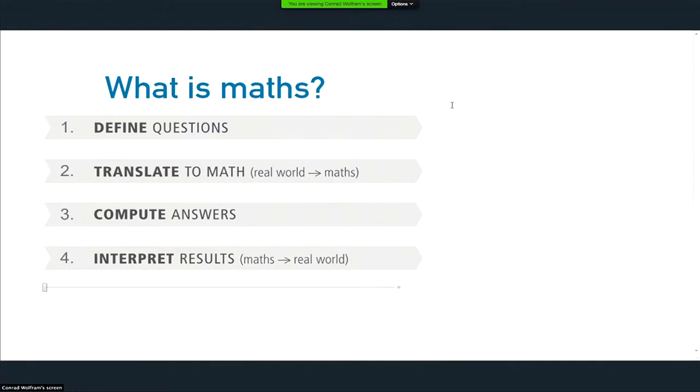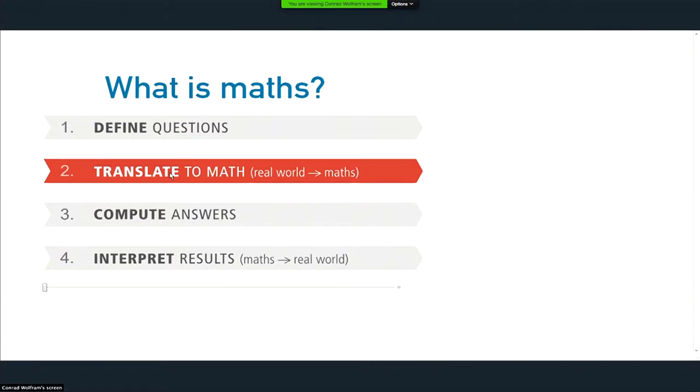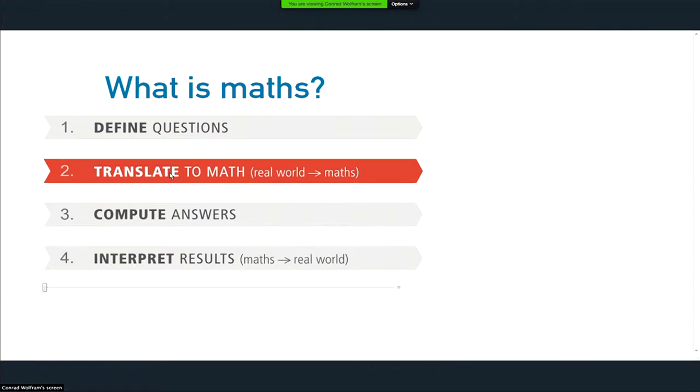When you look at math in a very simple way, math is really a four-step process. You're taking a question in the real world and you're defining that question. You're translating that into a piece of math, pulling data in, abstracting to something you can compute from. Then you're computing the answer, that's step three.